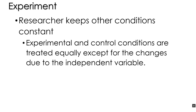The second element of an experiment is that the researcher keeps other conditions constant. The experimental and control conditions are treated equally, except for the change due to the independent variable. In our example, the independent variable is violent versus non-violent cartoons, and so everything about the experimental and control conditions should be similar or constant except for the levels of the independent variable.